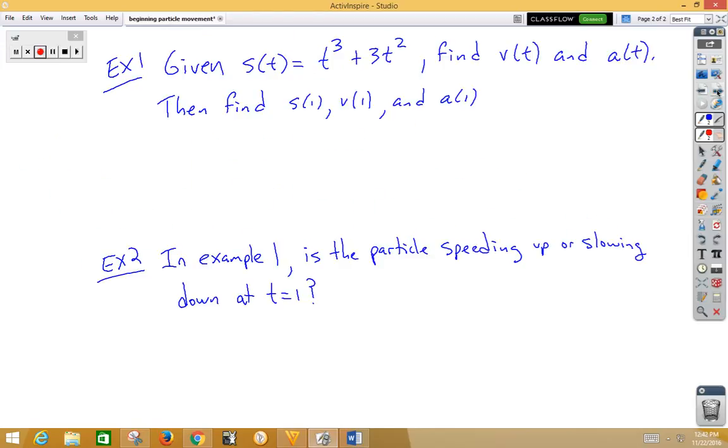But let's take a look at a couple of basic examples. Example 1, given s(t) is t³ + 3t², find v(t) and a(t), then find s(1), v(1), and a(1). So this function describes Pete's travels along the line.